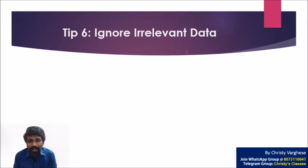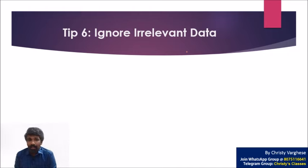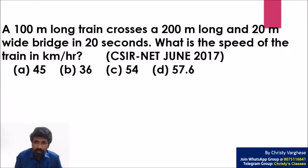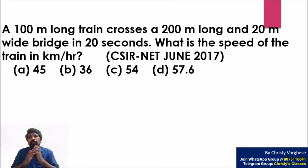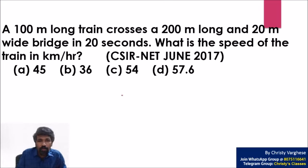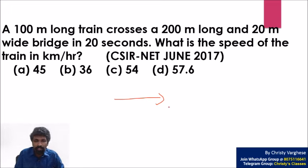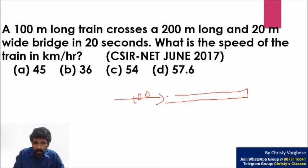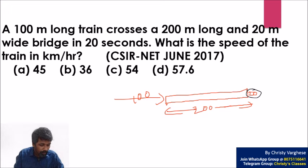The sixth tip is ignoring irrelevant data — the previous question itself was an example of this. Here is another: a 100-metre long train crosses a 200-metre long and 20-metre wide bridge in 20 seconds. The irrelevant data is the 20-metre width of the bridge — it has nothing to do with the question because the train must cross the length of the bridge, not its width.